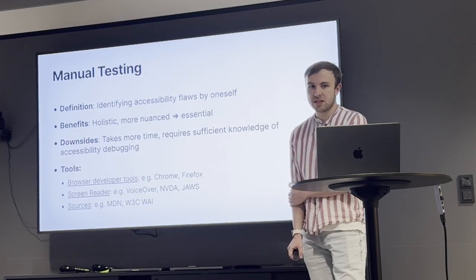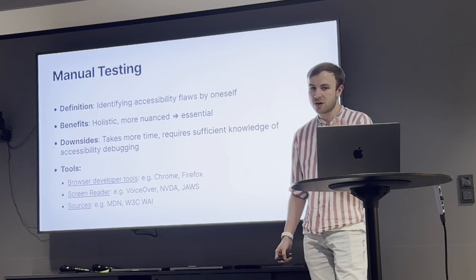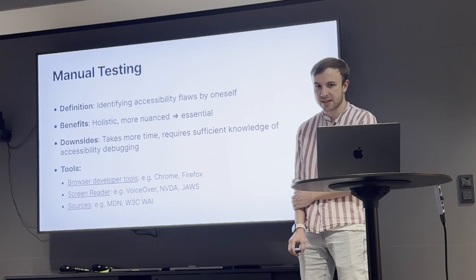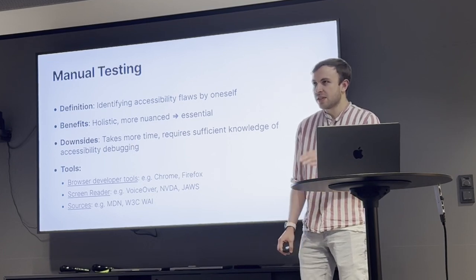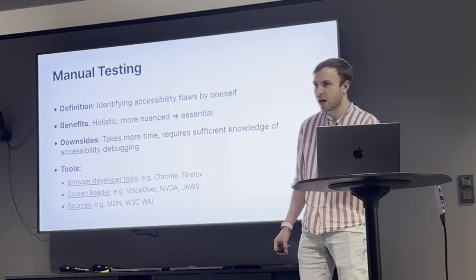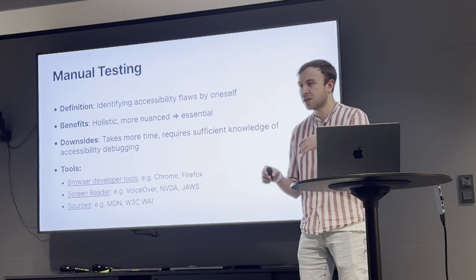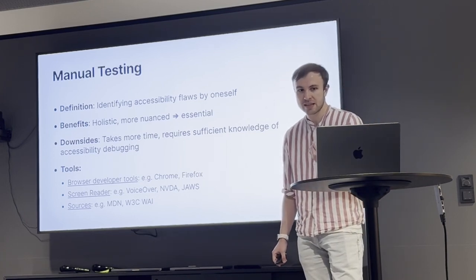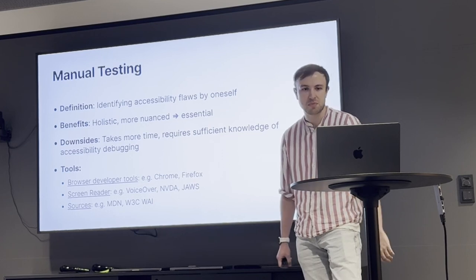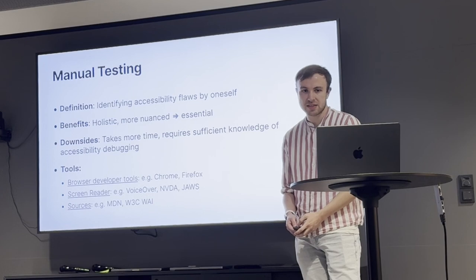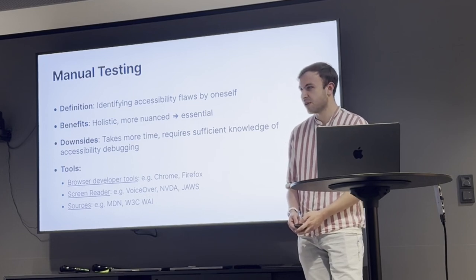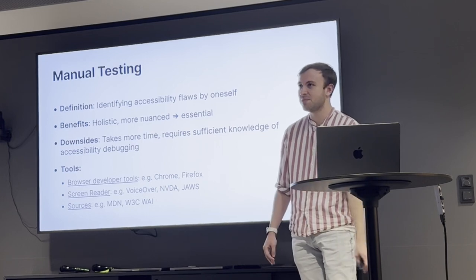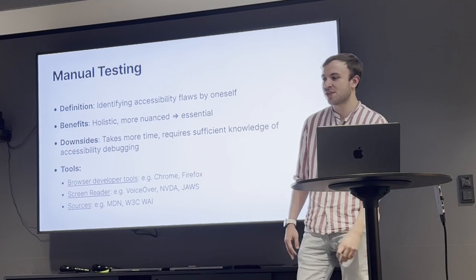Once you're done with automated testing, you proceed with manual testing — doing the accessibility debugging by yourself, by hand. The benefits are that it's more holistic and more nuanced, meaning you can go deeper and identify flaws that are uncommon or require many factors to assess. It is an essential part. The downside is it takes more time and requires sufficient knowledge of accessibility — you can't identify flaws you don't know about.